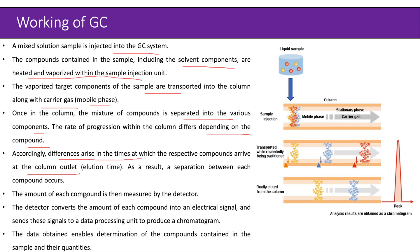The amount of each compound is then measured by the detector. The detector converts the amount of each compound into an electrical signal and sends these signals to a data processing unit to produce a chromatogram. The data obtained enables determination of the compounds contained in the sample and their quantities. As seen in the diagram, the liquid sample is injected into the column, passes through with the carrier gas mobile phase, gets separated into different components, and as each component elutes, a signal is produced in the form of a chromatogram.